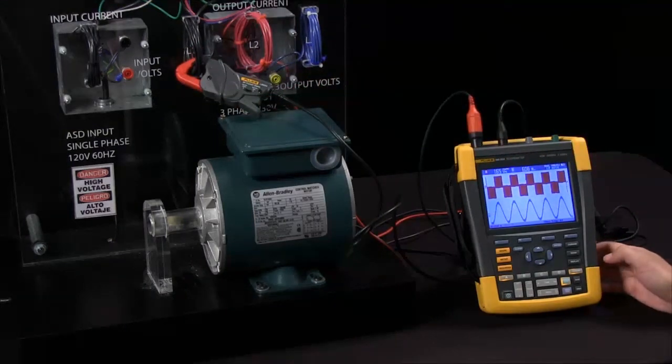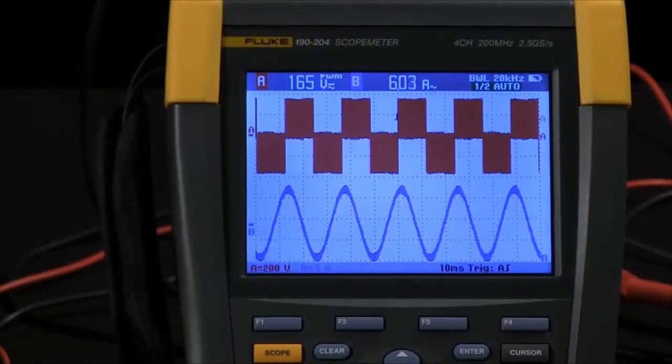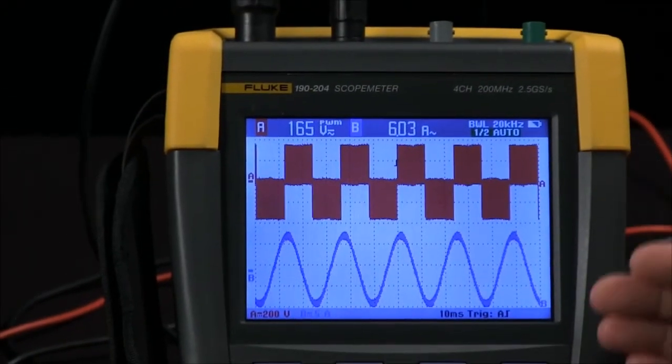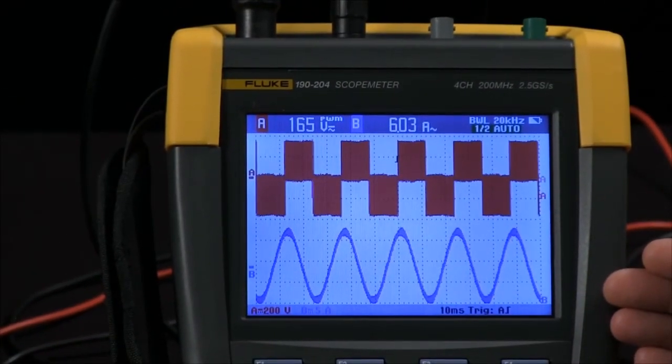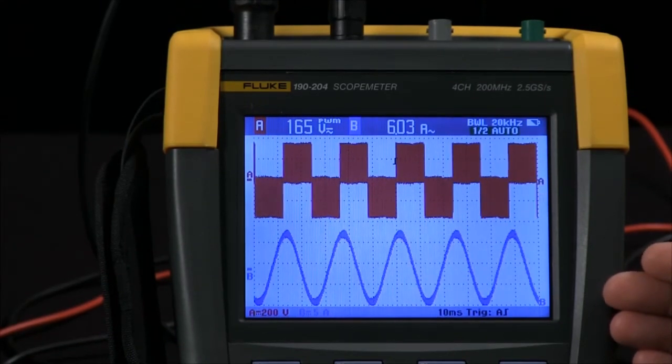And as you can see with connect in view it pops right up and I am looking at both my voltage and the current on a Fluke 190 series scope meter.